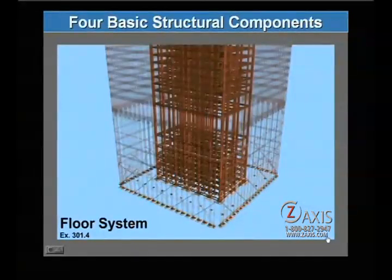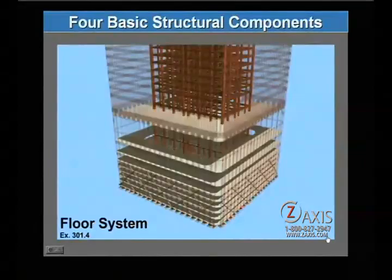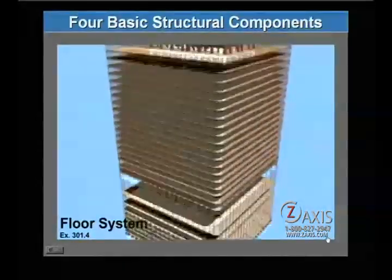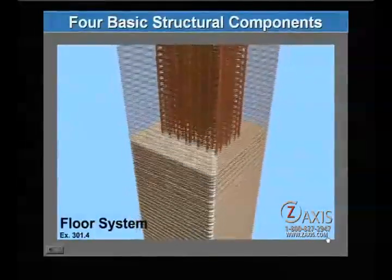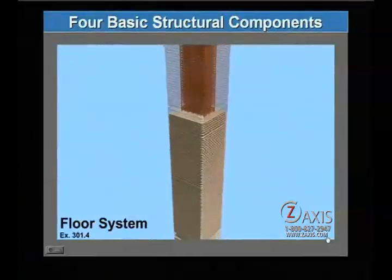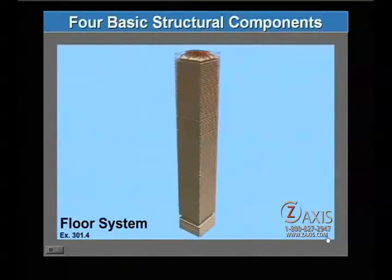The fourth sequence illustrates the floor system that also tied the perimeter tube to the core columns. Each concrete floor of the World Trade Center was an acre in size, most of which was open space free of support columns, since this unique design placed the columns around the exterior.